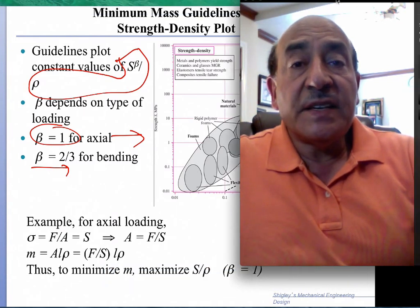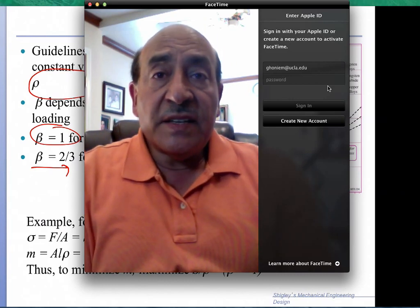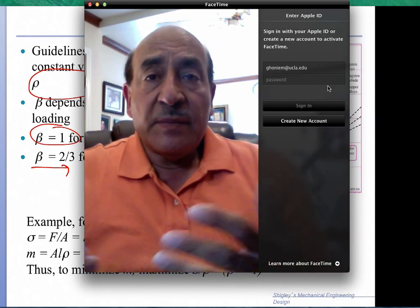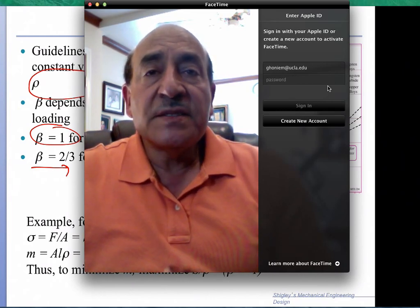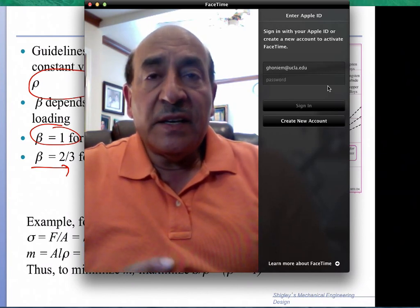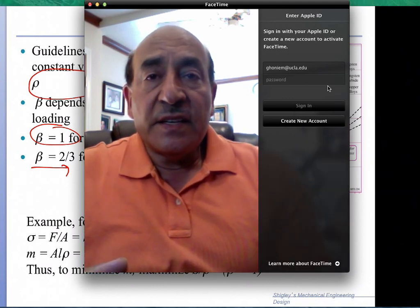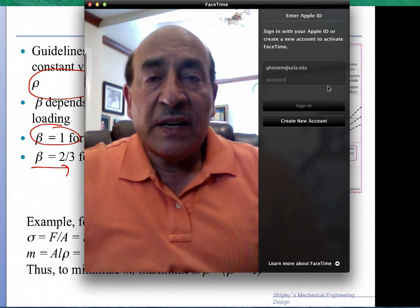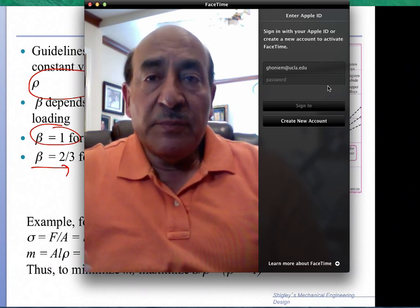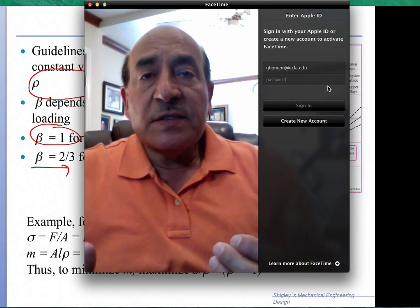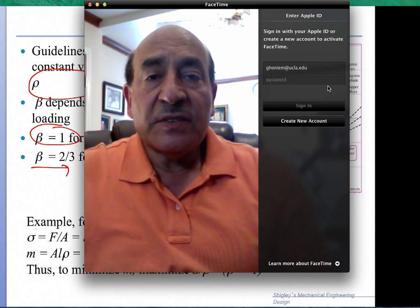As you can see now, this is really the endgame of selection of materials, and you have now, it's like a palette that one is using to paint. As a designer is using this palette to paint, you have a very wide variety of families of materials, and once you bring in the design constraints in terms of the loading or the strength that you require, then you either maximize the stiffness for a minimum weight or you maximize the strength for a minimum weight. And I think that covers pretty much what we needed to cover.